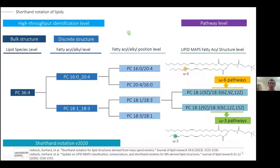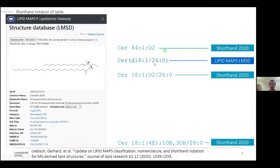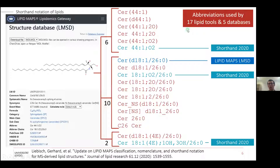When using high-throughput mass spec-based lipidomic workflows, we usually report lipids at either the bulk structure or discrete structure level. There is a huge gap between what we can confidently report and what has biological meaning. If we have names in this format, we can probably find some way to connect to the pathway level. But in the real world, we collected results from 17 different lipid softwares and five databases for one single lipid structure, and we have so many different versions.